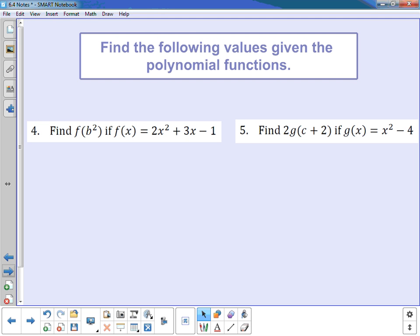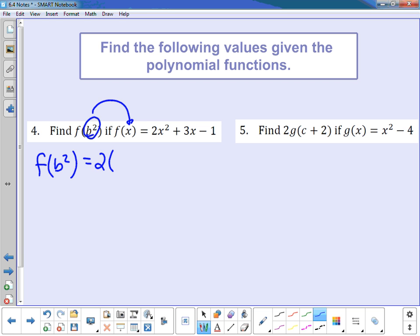Let's move on to number 4. In number 4, I'm trying to find the function of b², if my function of x is 2x² + 3x - 1. So what I'm doing is I'm taking the b², and I'm plugging that in any place that I see x. So if I write that out, it looks like this: f(b²) = 2(b²)² + 3(b²) - 1.